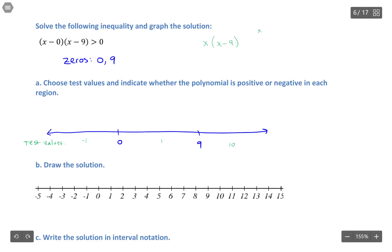So if I plug in negative one, then I have negative one times negative one minus nine, which is negative one times negative ten, or positive ten. So that means everything on this interval is going to be positive.